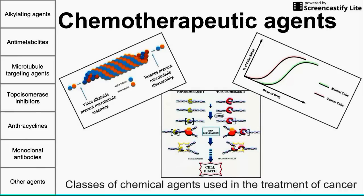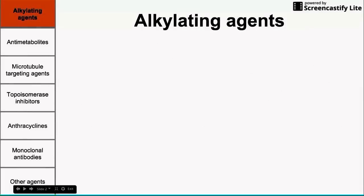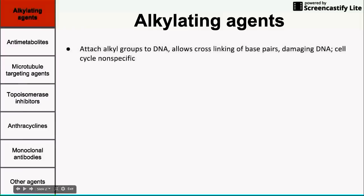We're going to start with alkylating agents first. Alkylating agents in general attach alkyl groups to DNA. They usually attach groups between two base pairs, allowing for cross-linking of base pairs. This damages the DNA, makes you unable to replicate it, and it kills the cell that way. The good thing about alkylating agents is that they are not specific to any part of the cell cycle, so they should be working on all cells regardless of what part of the cell cycle they're in.